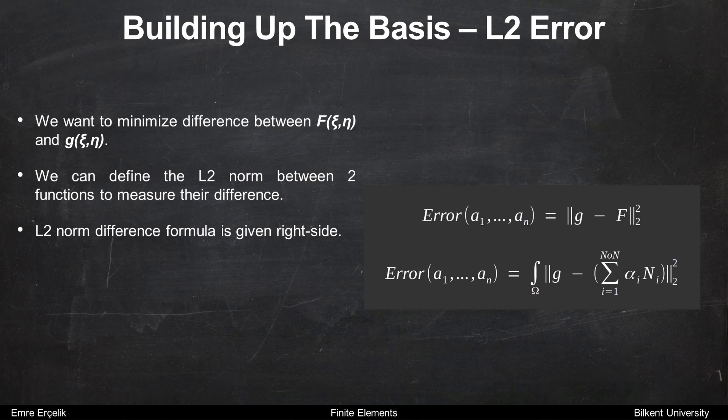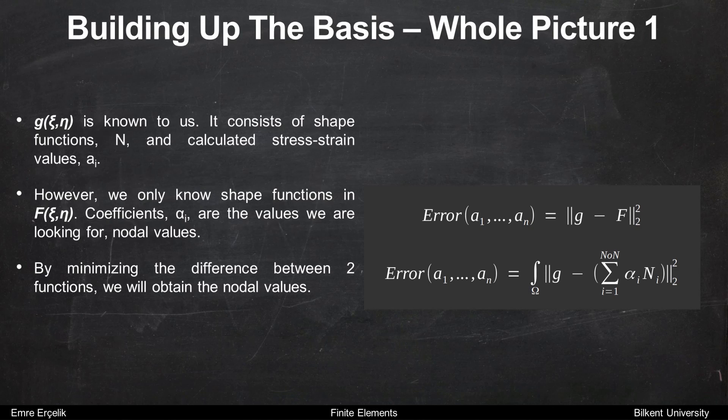So our aim is to minimize the difference between F and G functions. We can define the L2 norm between two functions and measure their difference. L2 norm difference formula is given in the right side. Now we defined our function to minimize: error function.